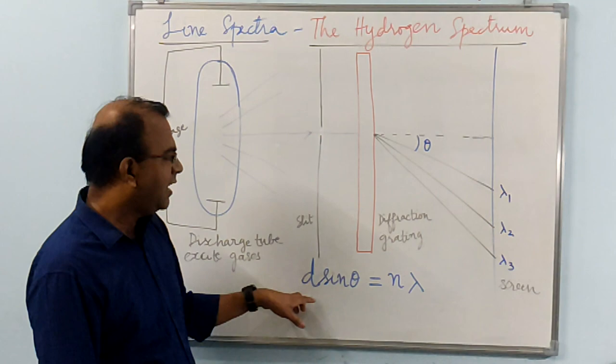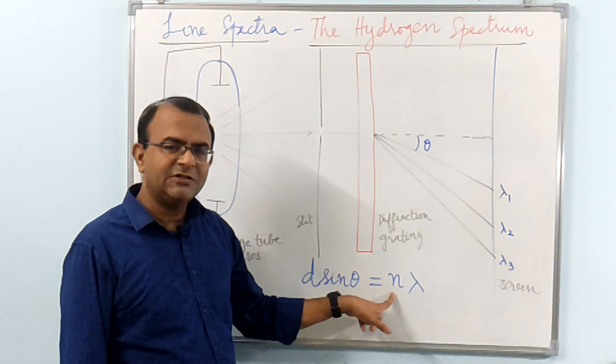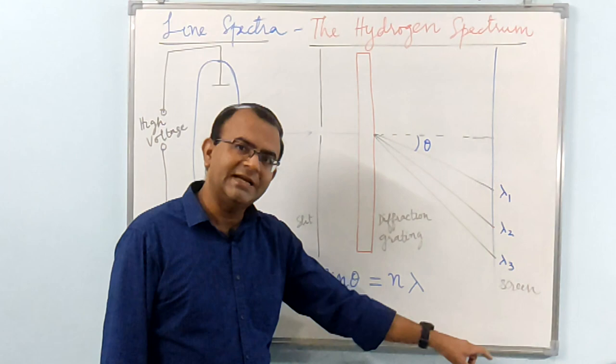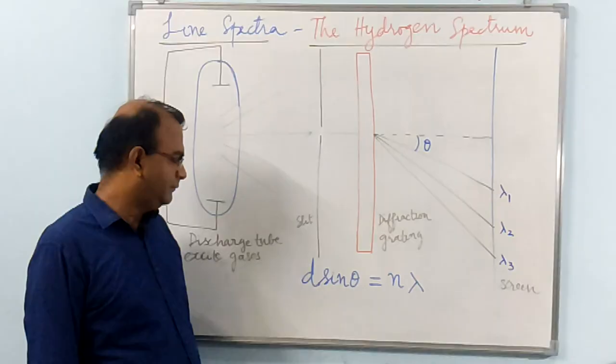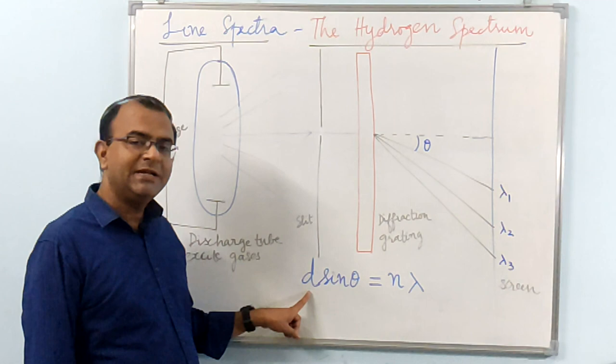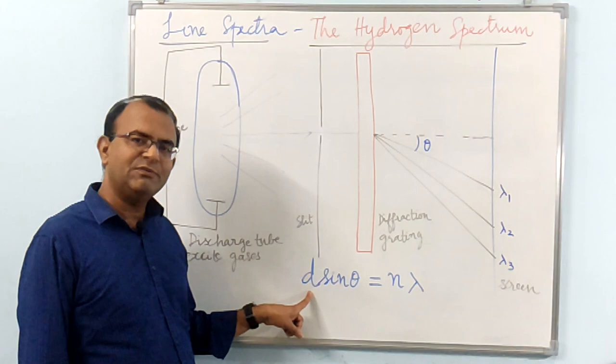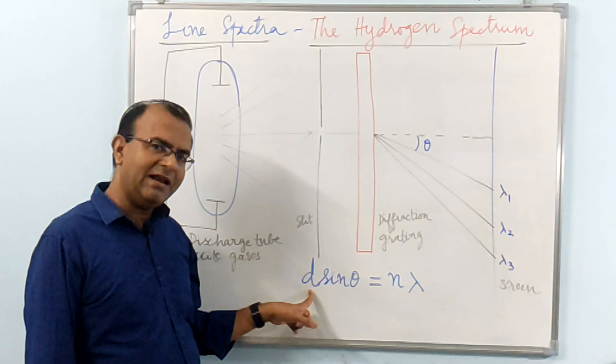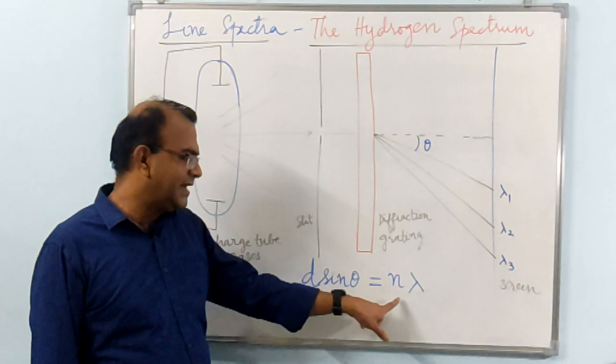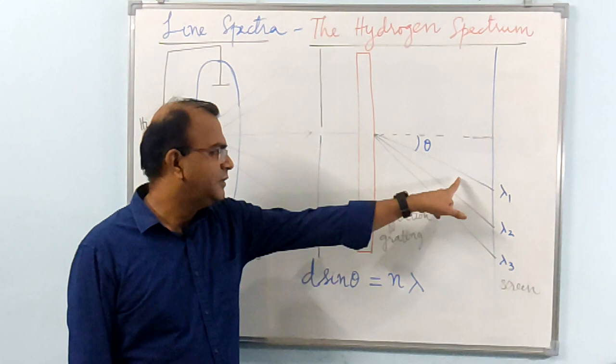The intensities of these orders would be different. N equals 1 corresponds to the first order and hence it would be the wavelengths with strongest intensities. Here, theta is the angle of diffraction. In this equation, D is called the grating constant, which is typically the sum of the thickness of the line plus the distance between two lines. Theta is the angle of diffraction, N is the order of diffraction, and lambda is the wavelength. For each wavelength, there would be a different angle of diffraction.